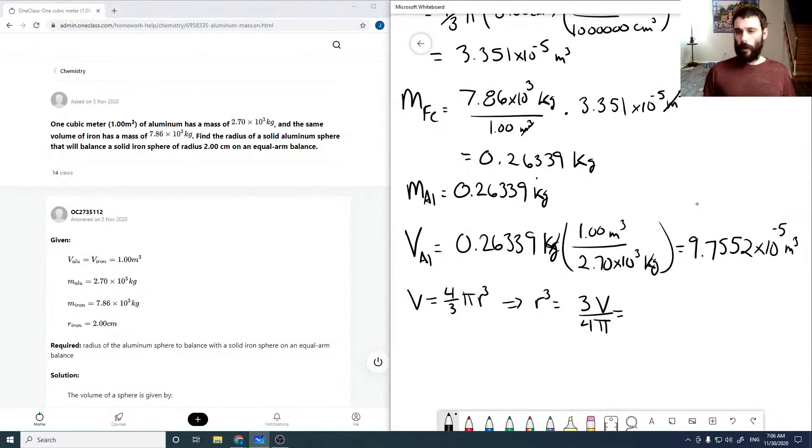Subbing in our volume now, we get that r cubed is 2.329 times 10 to the minus 5 meters. Taking the cube root, r is 0.02856 meters, or r equals 2.86 centimeters.